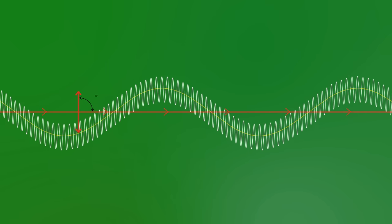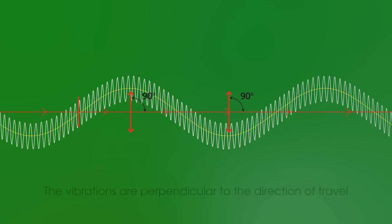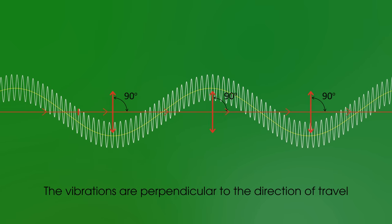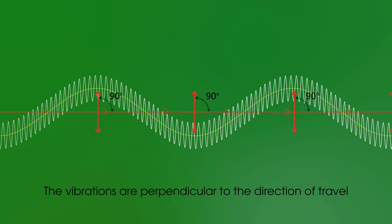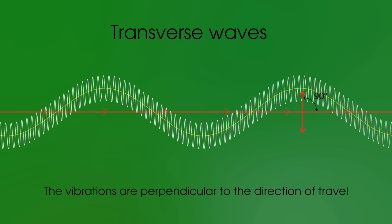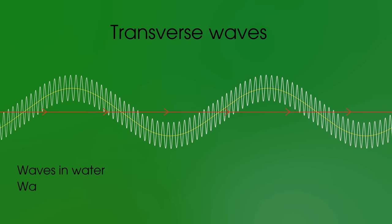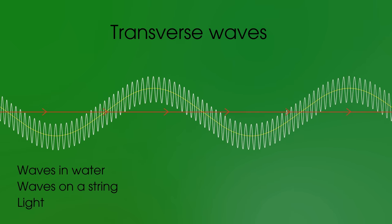Well first let's look at the sea waves. If we look at them represented with this slinky, we see that the vibrations are at 90 degrees or perpendicular to the direction of travel of the wave. These are called transverse waves and examples of them are waves in water, waves on a string or light waves.